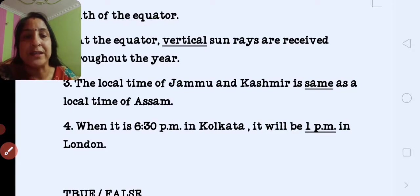Next is when it is 6:30 pm in Kolkata, it will be dash in London. It is 1 pm. As London time is 5 hours 30 minutes behind the Indian time, that's why it is 1 pm.